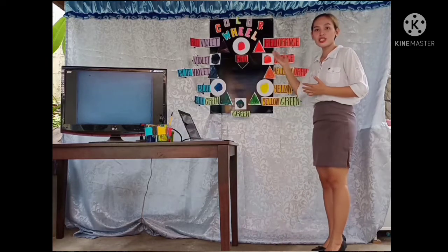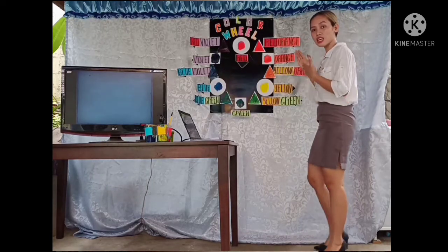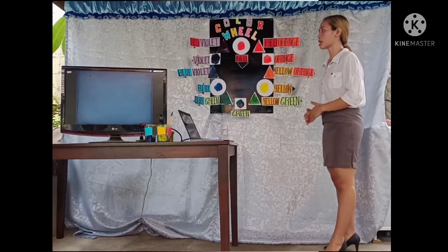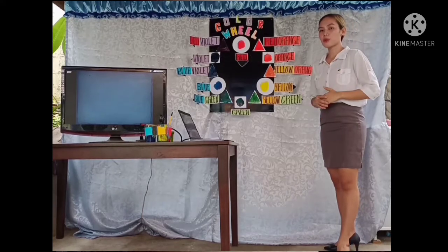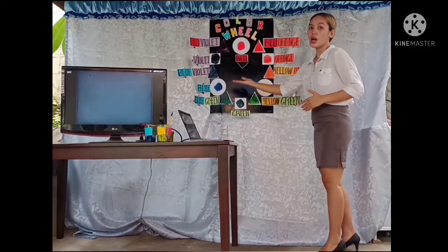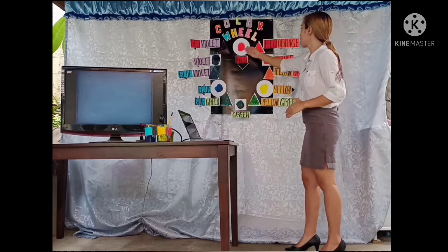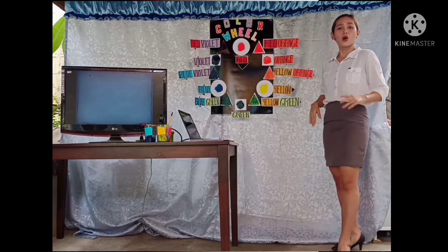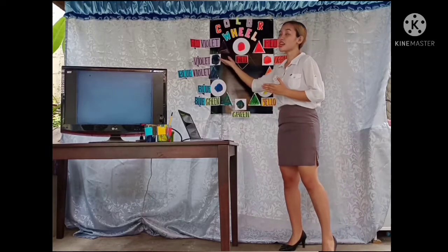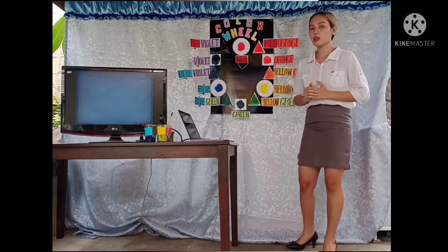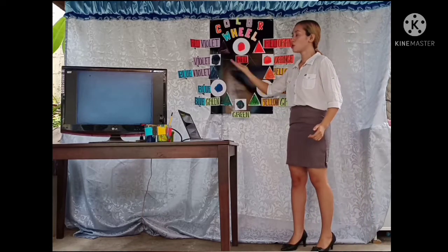Okay. Now, we already completed the colors needed in the chart. So, again, class, primary colors are those in circle, and secondary colors are those in squares, and those tertiary colors are all in triangles. Again, class, what are those primary colors? Red, blue, and yellow. Correct. Always remember, class, that those primary colors will always form a triangle. Now, class, what are those secondary colors? Very good. The secondary colors are orange, green, and violet. How about those tertiary colors? Red-orange, yellow-orange, yellow-green, blue-green, blue-violet, and red-violet.